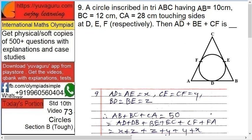Now it touches at D, E, and F. We have to find AD plus BE plus CF. These are half of the sides.